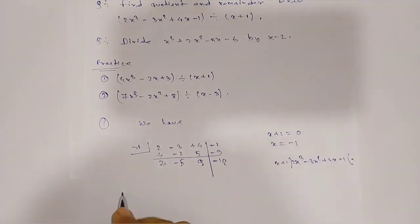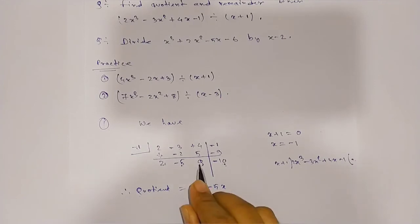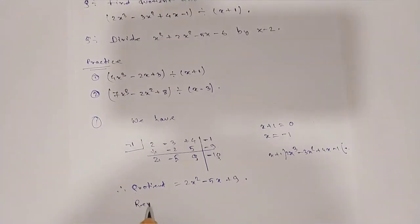Therefore, quotient equals 2x² minus 5x plus 9, and remainder equals minus 10. This is your answer.